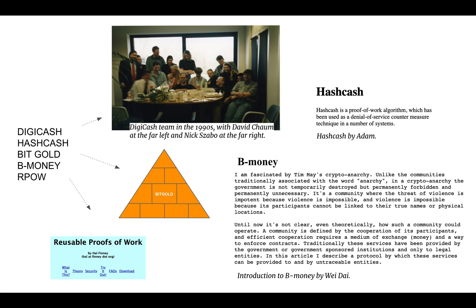Hashcash was created in 1997 by Adam Back, a cypherpunk, to prevent email spam. It is not really a currency or an attempt to create money in the online world. However, its underlying technology of forcing computers to do a lot of work in the form of computational cycles — called proof of work — to perform an action is at the core of what would become the future cryptocurrencies we know today.